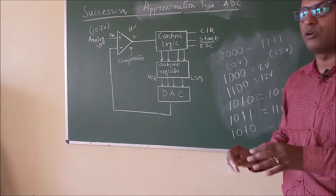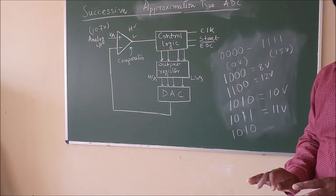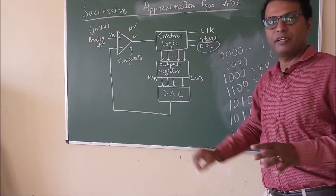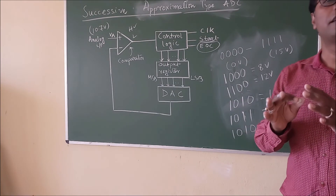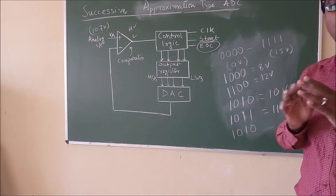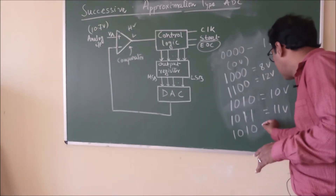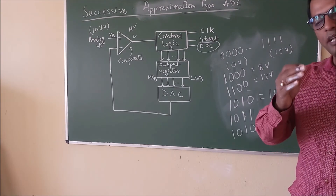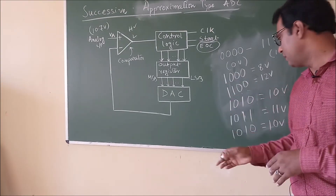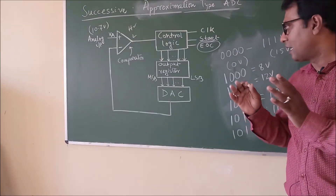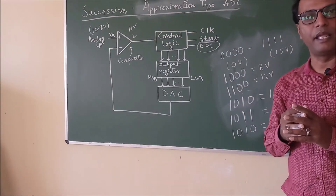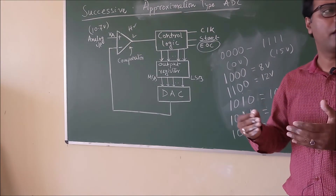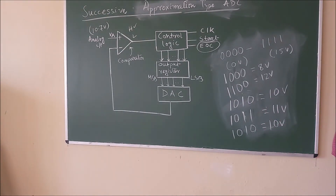So it is found that 1010. All 4 bits have been applied, and the EOC signal is activated, signaling that the conversion process is completed and the desired value is 10 volts. So 10.7 volts, that analog value, is approximated with the corresponding digital value 1010, which means 10 volts. That is why this method is named successive approximation type, and we have obtained the digital value 1010 for the 10.7V input. Thank you.